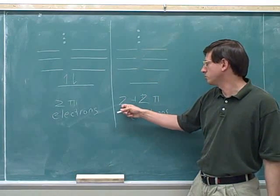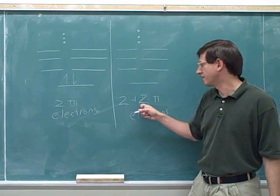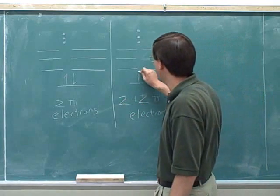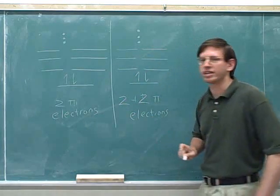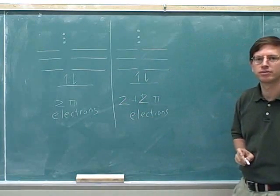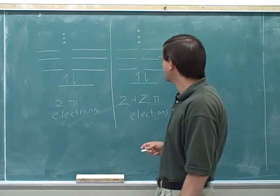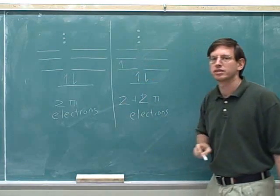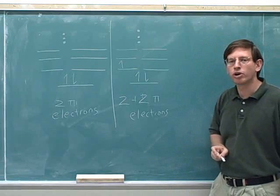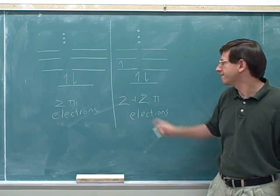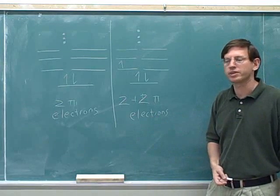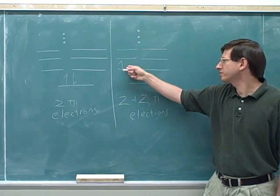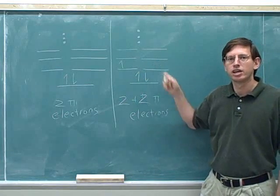So let's say we take our original two pi electrons and add another two pi electrons. The first two pi electrons go down here. Then the next pi electron goes here. And now I still have one more pi electron — the fourth pi electron. Where am I going to put that? Should I put the fourth electron in this orbital or in this orbital on the right?